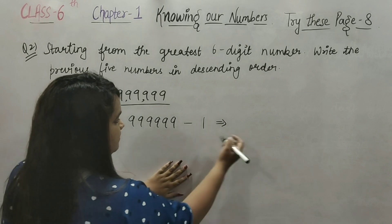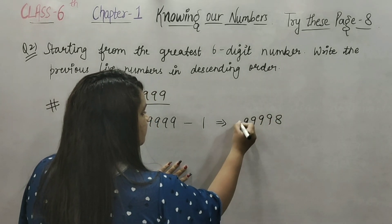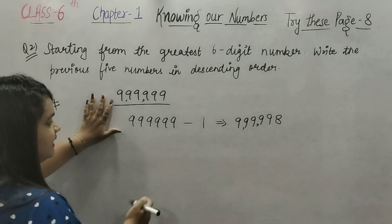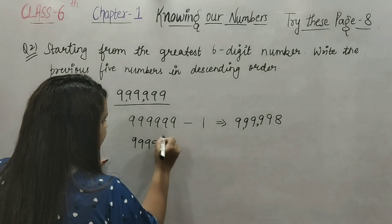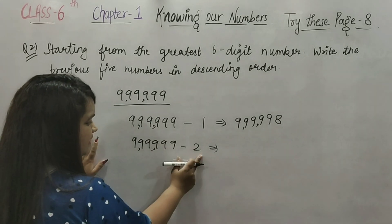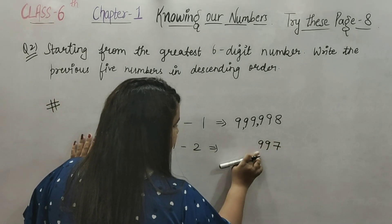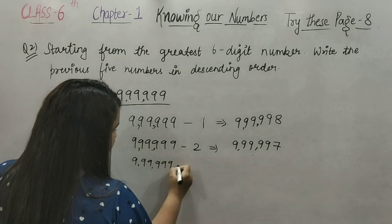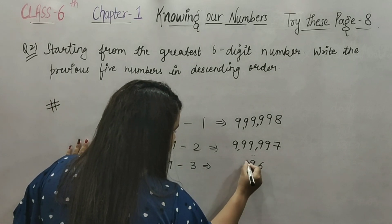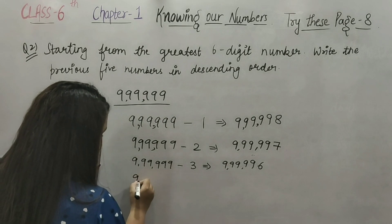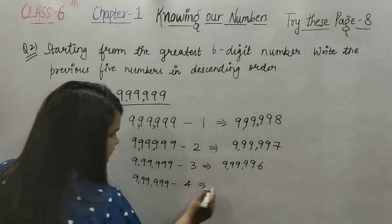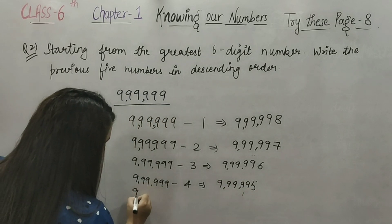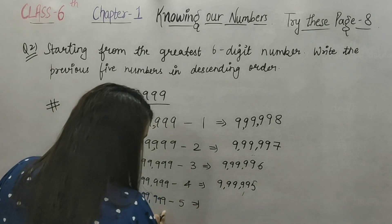अगर हम particularly माइनस करके देखते हैं, तो 9 में से 1 घटाने पर 8 आता है। फिर उसमें से 2 माइनस करें तो 9 minus 2 is 7। फिर 3 माइनस करें — 9 minus 3 is 6। फिर 4 माइनस करें — 9 minus 4 is 5। उसके बाद 5 माइनस करें — 9 minus 5 is 4।